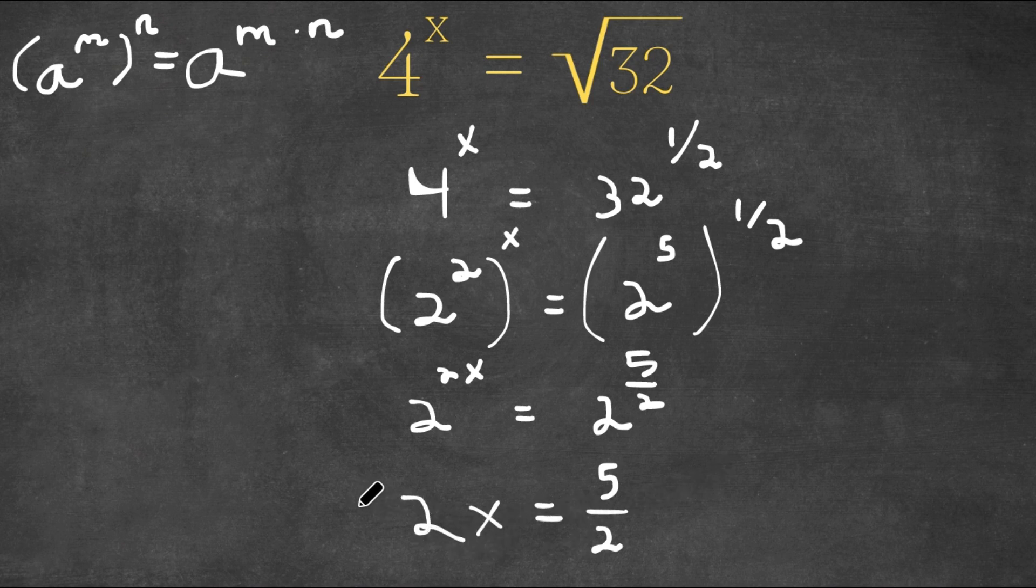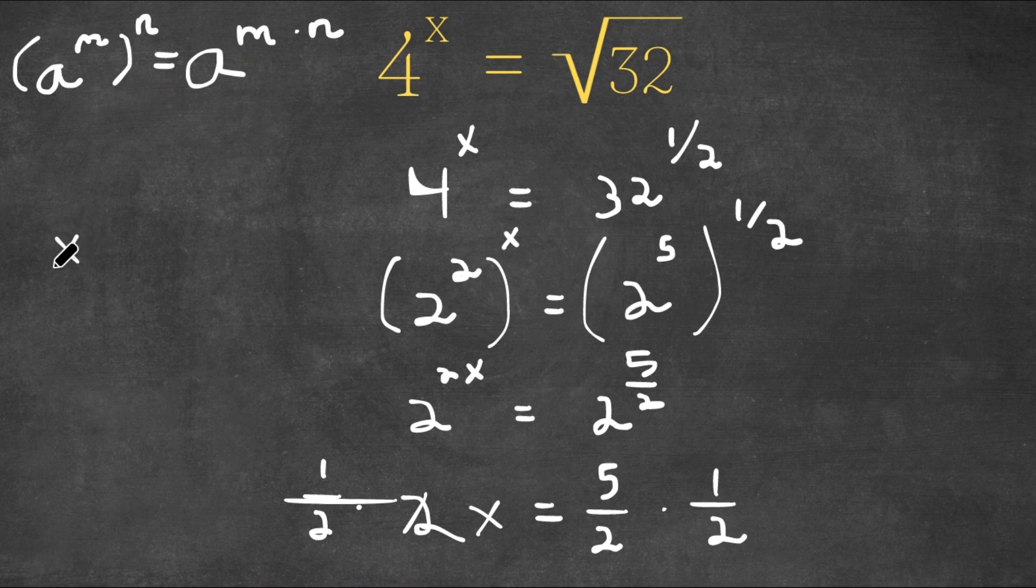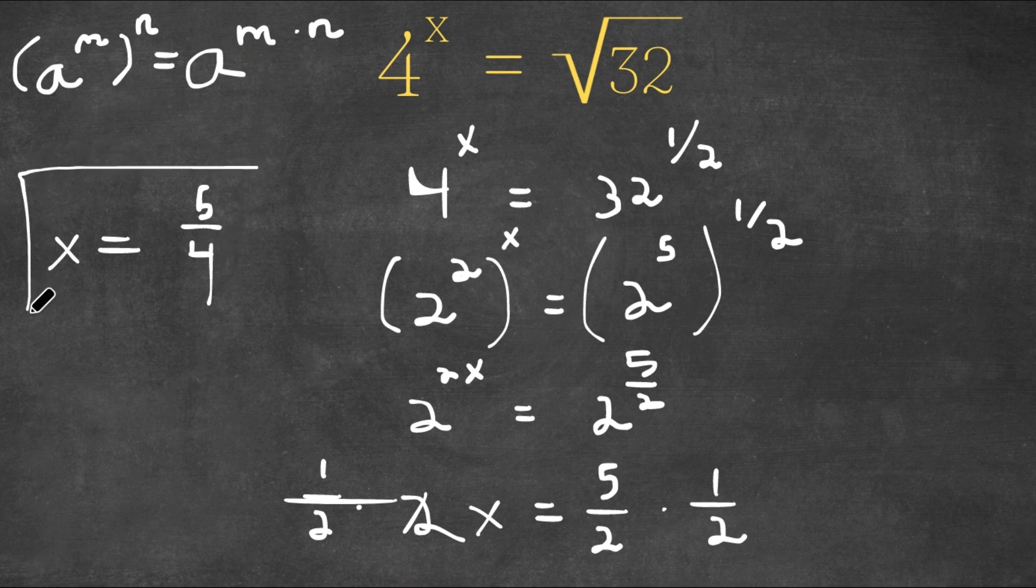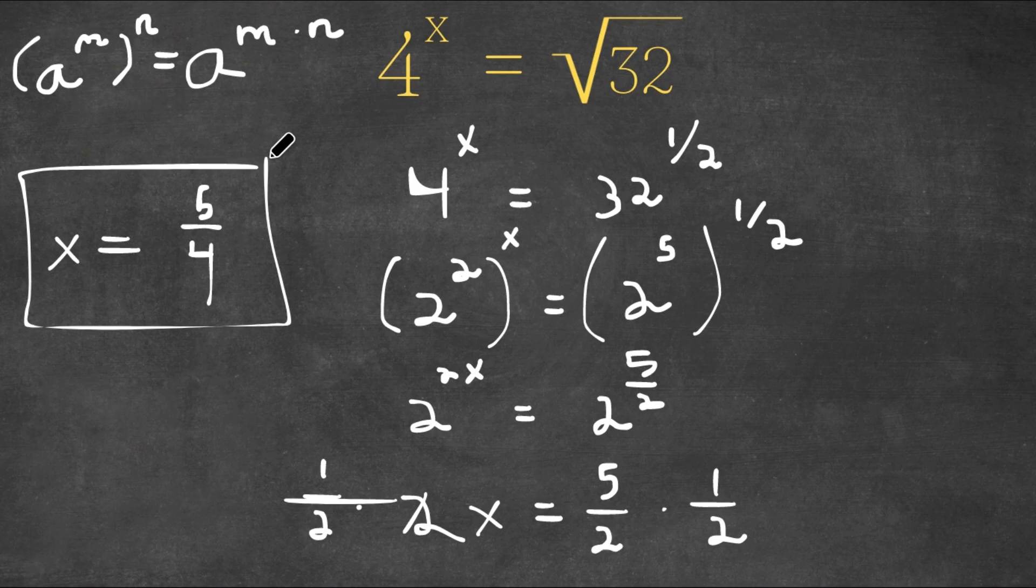So now if I multiply both sides by 1 half, so I can cancel out this 2, these 2 cancel out, and I get x is equal to 5 over 2 times 1 half. 5 times 1 is 5, so that's our numerator, and 2 times 2 is 4. So we get x is equal to 5 over 4, and this is our answer.